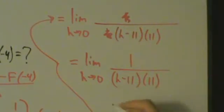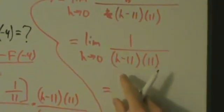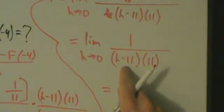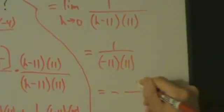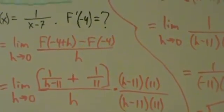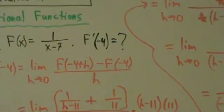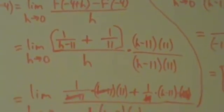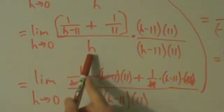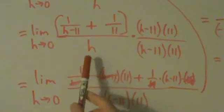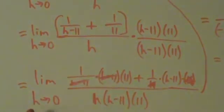Now we can do direct substitution. Plugging in h equals 0, we get 1 over 0 minus 11 times 11, which is 1 over negative 11 times 11, or negative 1 over 121. So f prime of negative 4 equals negative 1 over 121. This was more complicated than linear or quadratic functions, but the idea is the same: simplify to cancel the h, since direct substitution initially gives division by zero.